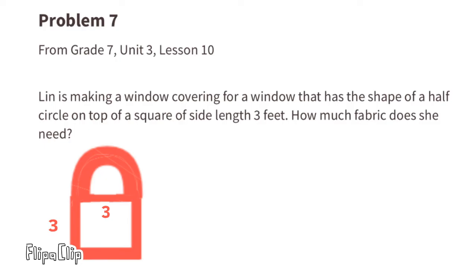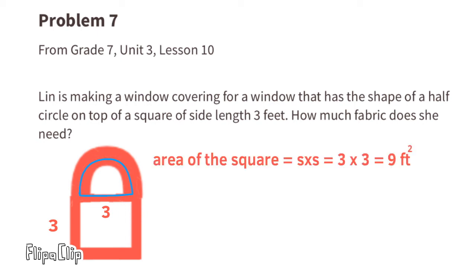Problem number seven, from seventh grade unit three lesson ten — Lynn is making a window covering for a window shaped like a half circle on top of a square with a side length of three feet. You can see the square in red and the half-circle window highlighted in blue. First, the area of the square: three times three equals nine square feet.